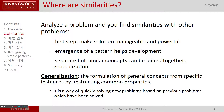Generalization is the formulation of general concepts from specific instances by abstracting common properties. Generalization is the way of quickly solving new problems based on previous problems we have solved. We can take an algorithm that solves some specific problem and adapt it so that it solves the whole class of similar problems. Whenever we have to solve a new problem of that kind, we just apply this general solution.